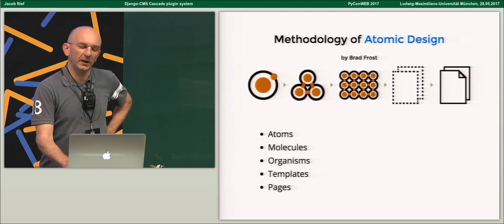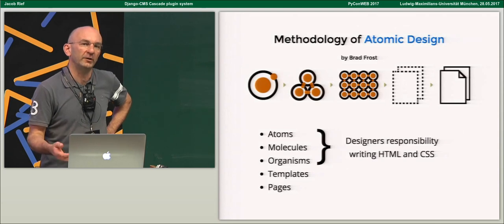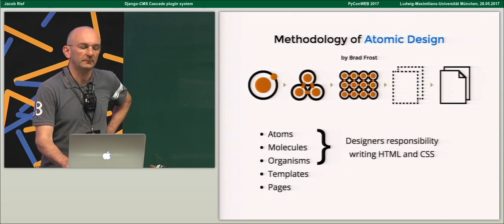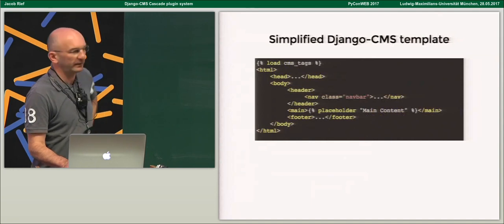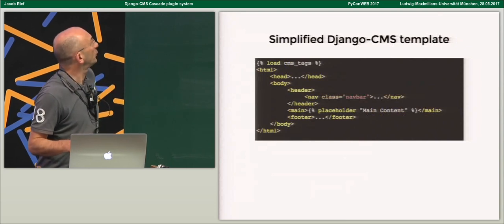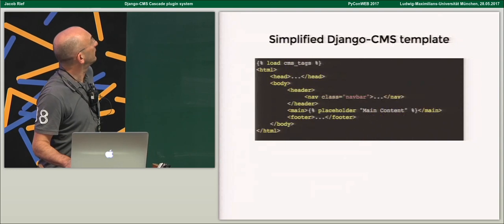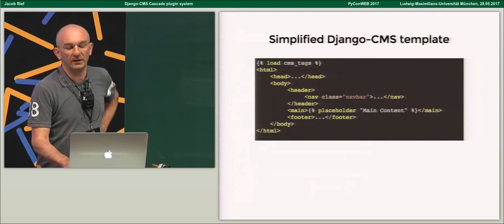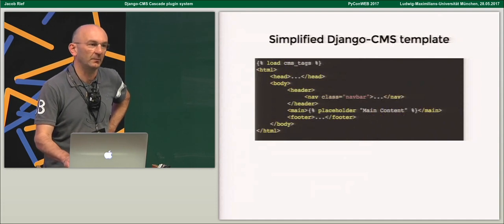Now we can separate responsibilities: programmers and UI experts build the atoms, molecules, and organisms — creating HTML fragments — and then project managers and content editors can assemble these components to build the final websites. We decouple these development steps so designers and programmers do not have to know where these components will finally be assembled. This also makes it far easier to write unit tests for single components, which are then even reusable for different sites. In Django CMS, a simplified template often used for atomic design has just one big placeholder where all the content of your site is added.